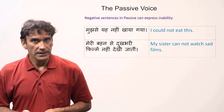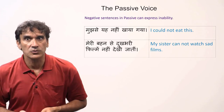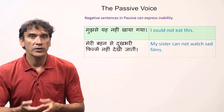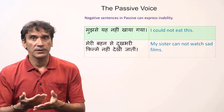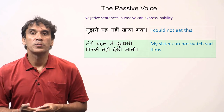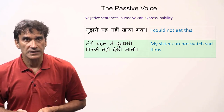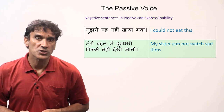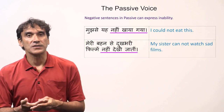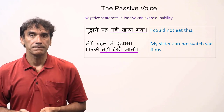An important note: negative sentences in passive can express inability to do something. 'Mujh se ye nahi khaya gaya' — I could not eat this / I was not able to eat it. 'Meri behen se dukh bhari filmen nahi dekhi jaati' — my sister cannot watch sad films. Both sentences are passive with negations and express inability to do something.